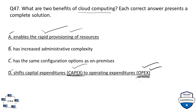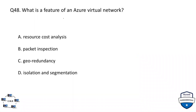This model is known as pay-as-you-use or pay-as-you-go. Question 48: what is a feature of an Azure Virtual Network? Options are: A) resource cost analysis, B) packet inspection, C) geo-redundancy, and D) isolation and segmentation. The correct option is D — isolation and segmentation.